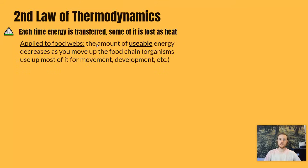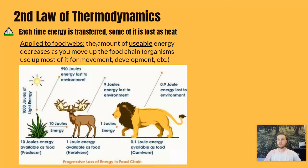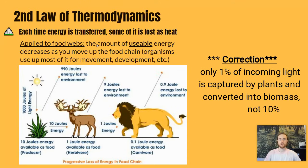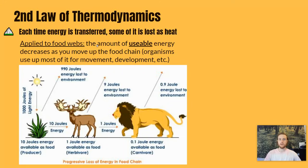Each time energy is transferred from one organism to another, the amount of available energy decreases, because the organism that was just eaten had used up most of the energy for movement, development, and cellular respiration. For example, if we have 1,000 joules of light energy that producers are receiving, they're going to use 90% of that — about 990 joules for their growth and metabolism — and only about 10 joules are going to be available to the elk.